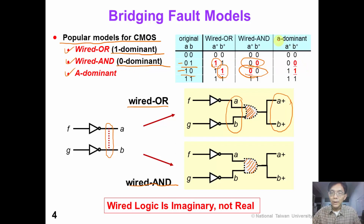Finally, we have the A-dominant fault model, which means the value of B is always controlled by the value of A. So these are the three popular fault models for bridging faults. Please note that in this picture, the wire logic is just an imaginary gate — they are not real gates in the circuit.